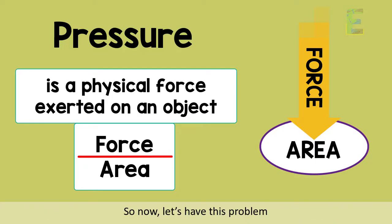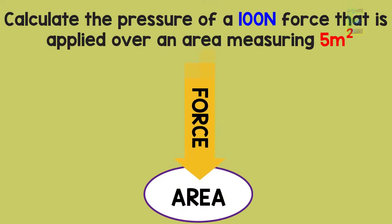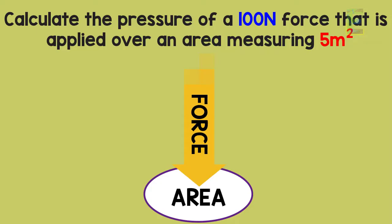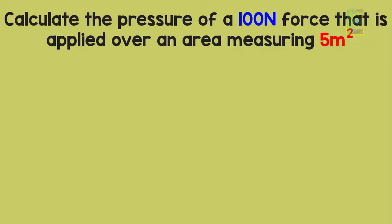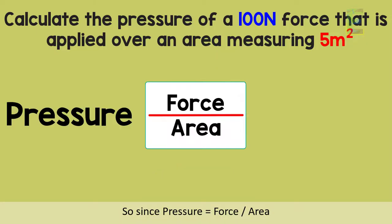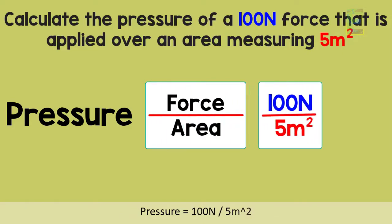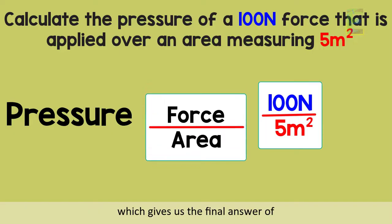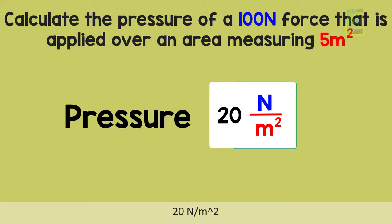So now, let's have this problem. Calculate the pressure of a 100N force that is applied over an area measuring 5 square meters. Since pressure is equal to force over area, pressure is equal to 100N divided by 5 square meters, which gives us the final answer of 20N per square meter.